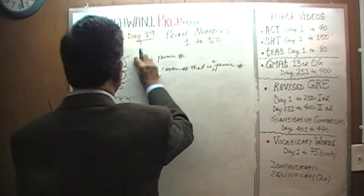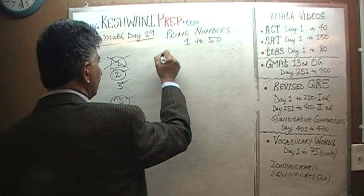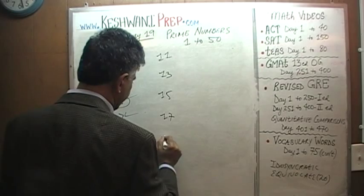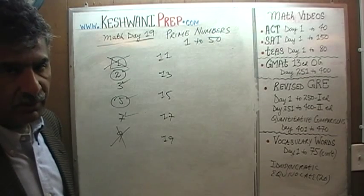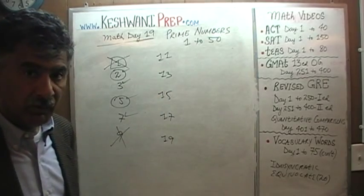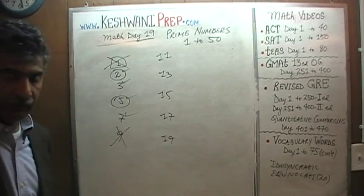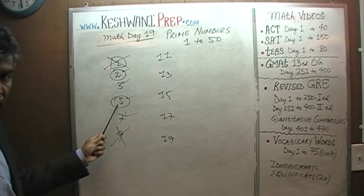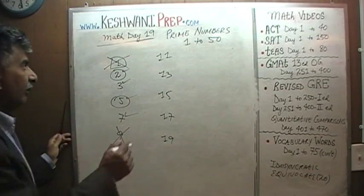Let's pick up speed now. The odd numbers 11 through 19 are: 11, 13, 15, 17, and 19. As the numbers get larger, we have to check whether a given number is prime or not. 11 is a prime number because we can't divide it by 3, by 5, or by 7. 9 is not a prime number, so 11 qualifies.